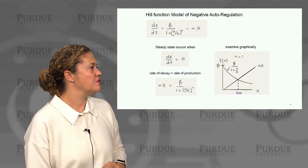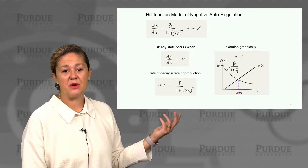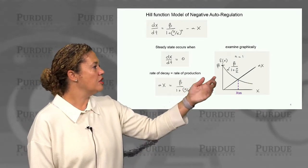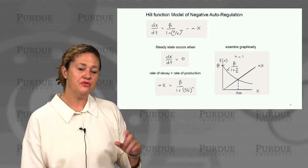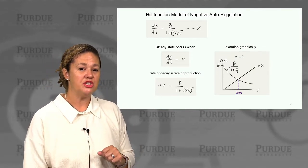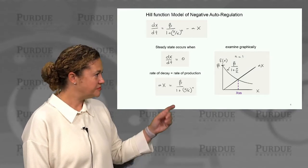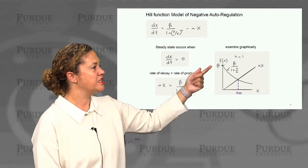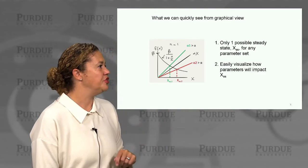Steady state occurs when dx/dt equals zero, or the rate of decay equals the rate of production or expression. It's very useful to examine this graphically. So if we plot alpha X along with beta over 1 plus X over K — where K is our threshold for the effect of that repressor X on expression, specifically the concentration at which X half-represses the maximum expression — here we've plotted for the case of n equal 1.